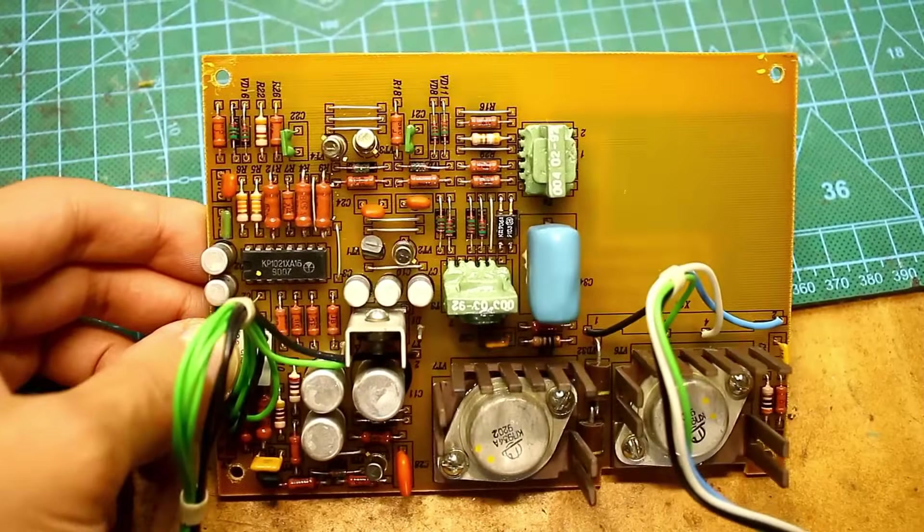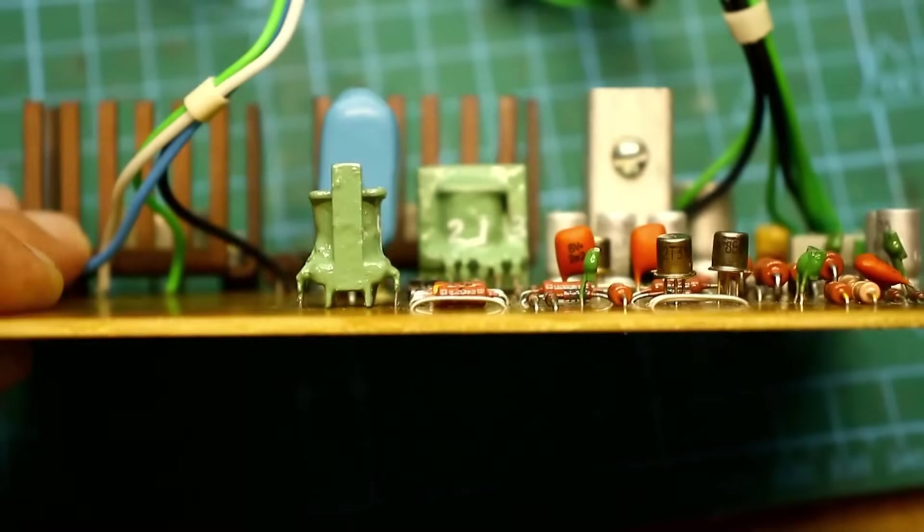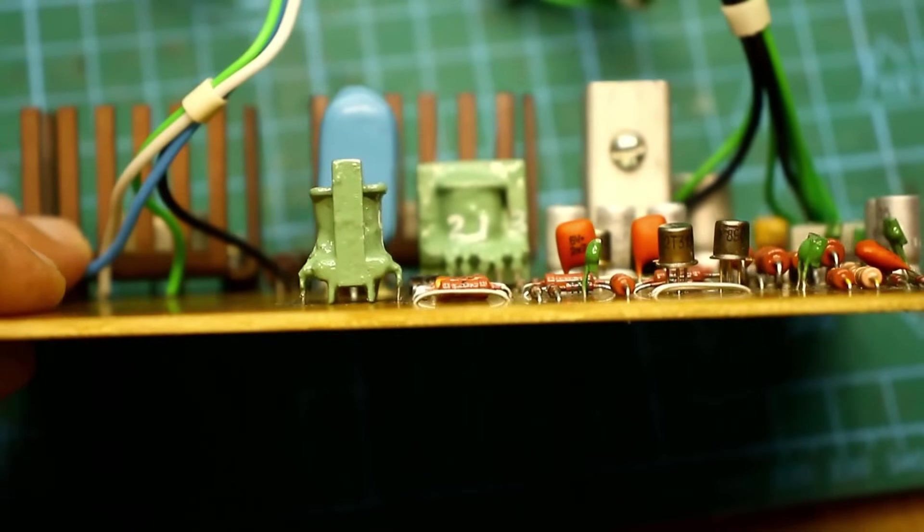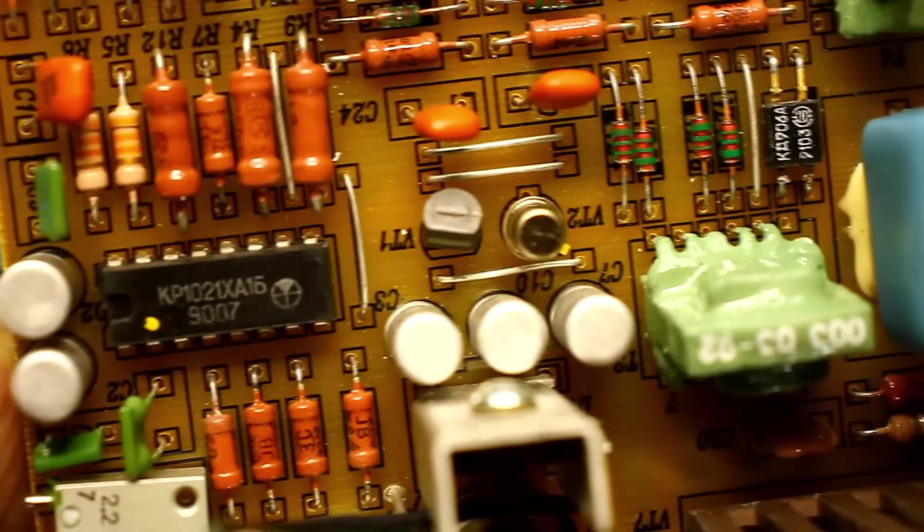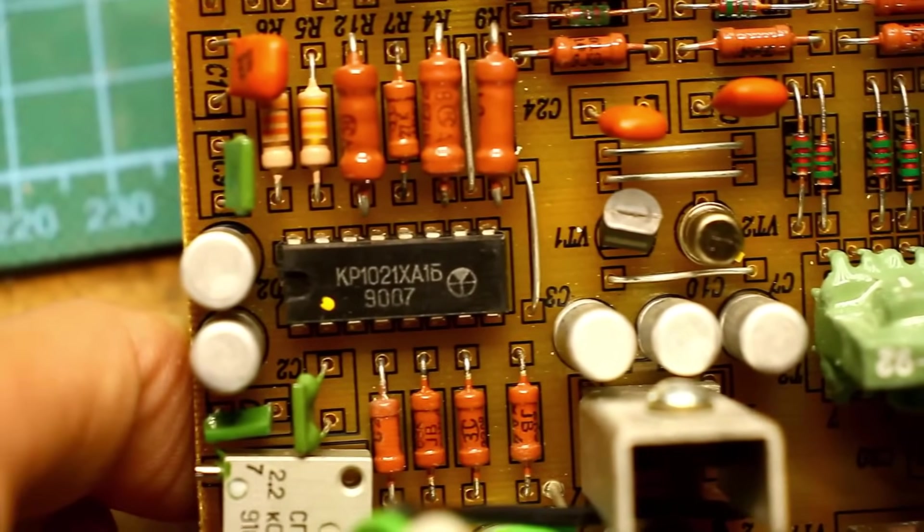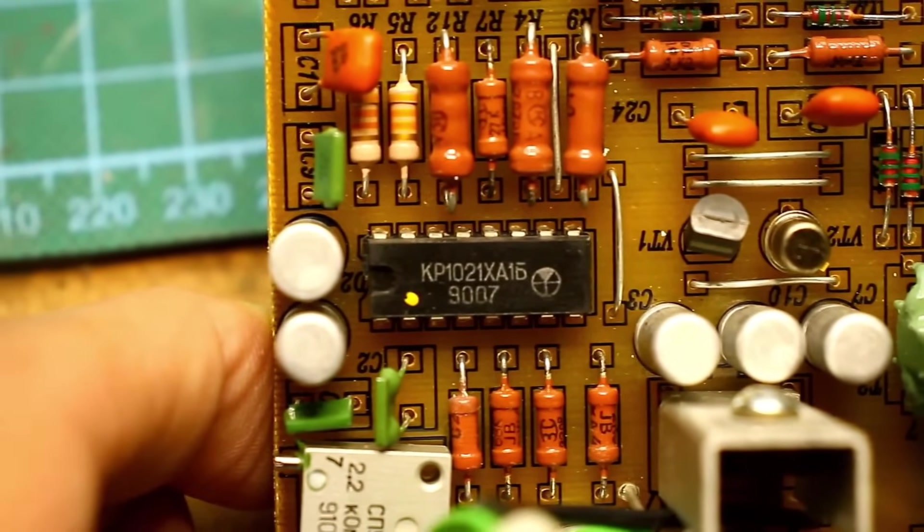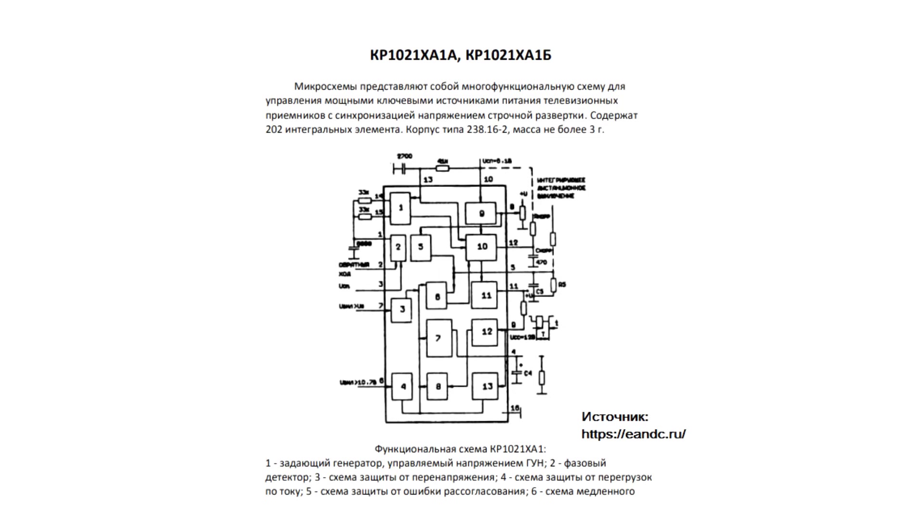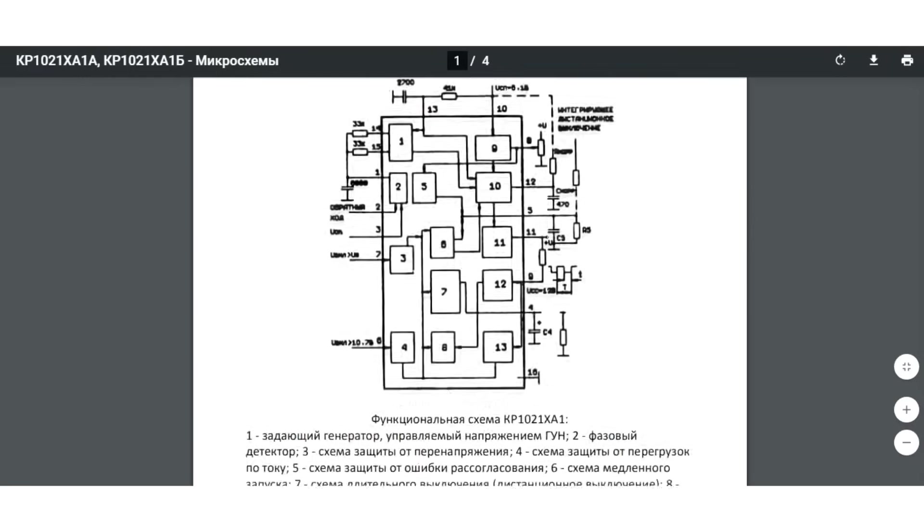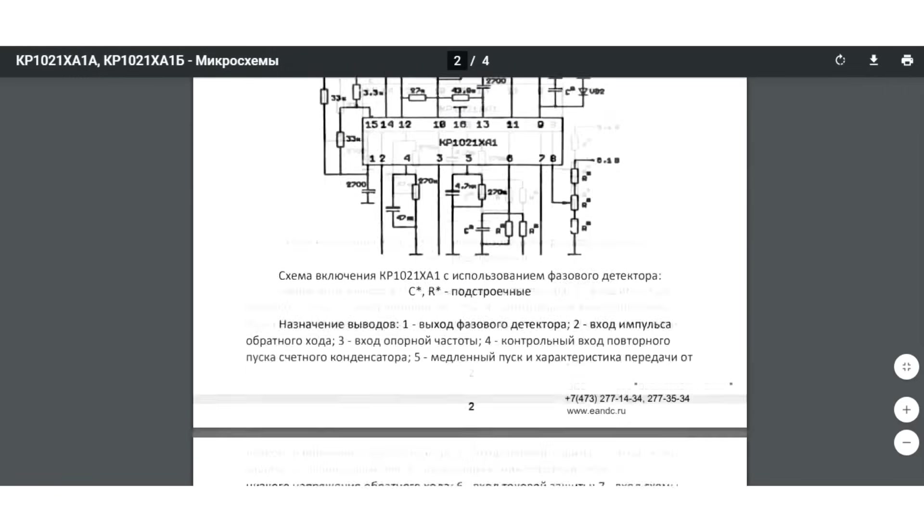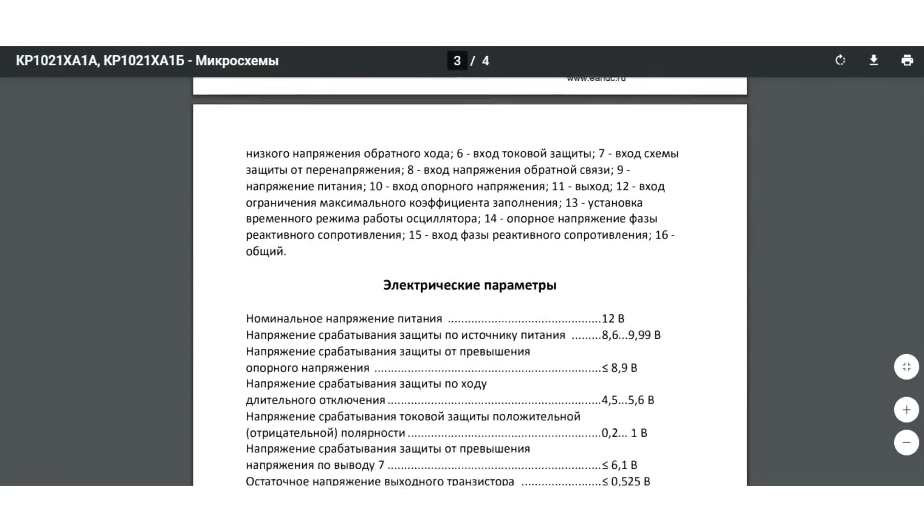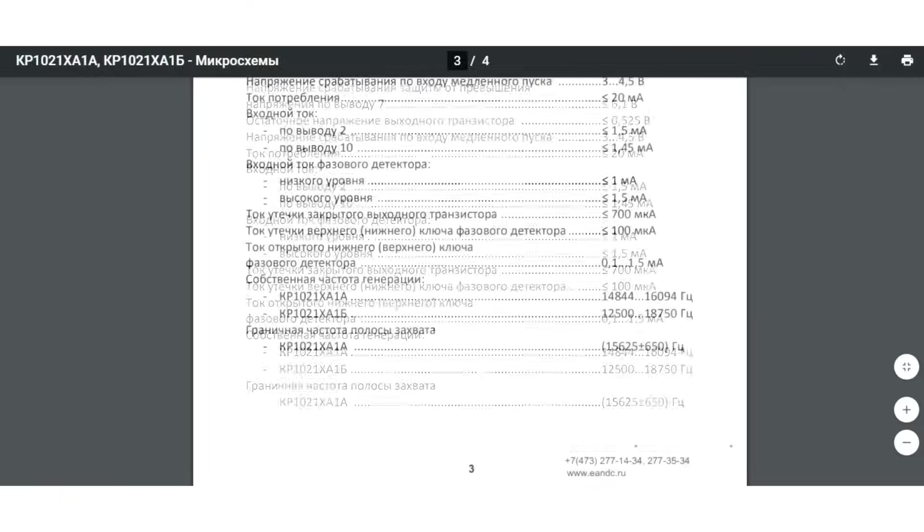Let's move on to the control board. Here, as mentioned earlier, there are a couple of transformers, a matching transformer and a current transformer. They are also encapsulated and fully waterproof. The entire power source is actually built around the KR1021 KH1B microchip, for which technical documentation can be found. Apparently, this is a specialized multifunctional microchip for power supply management. You can read the list of what this microchip is capable of yourself. It is packed with all sorts of protections, including a separate input for current protection, soft start, and is also equipped with its own reference source, oscillator, and error amplifier.